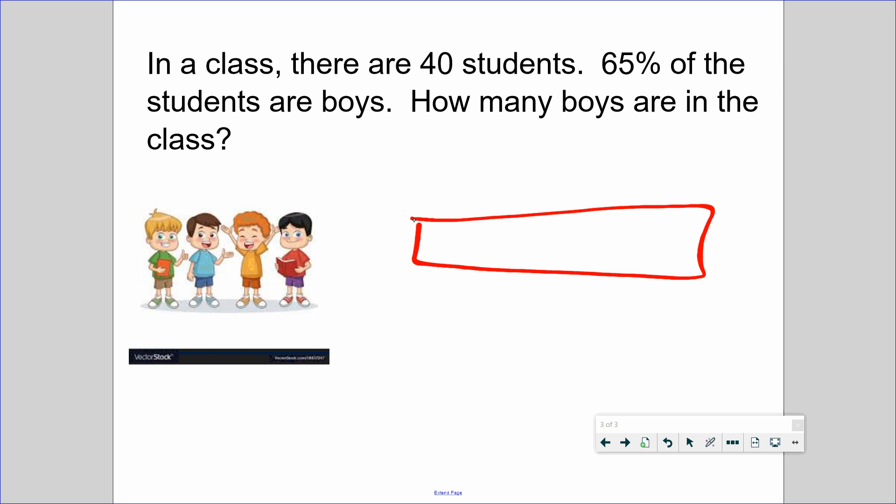Our last one: in the class there are 40 students, 65% of the students are boys—oh the teacher must be so happy about that. How many boys are in the class? So this represents 100% right here, and let's put 65% right here, that's more than half. 40 students goes right here, so 100% of the class is 40.